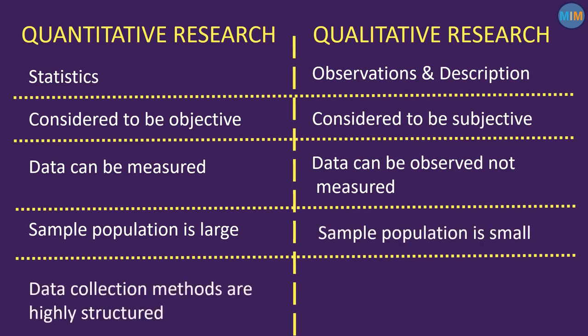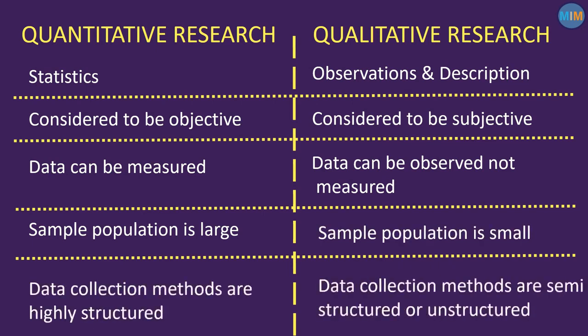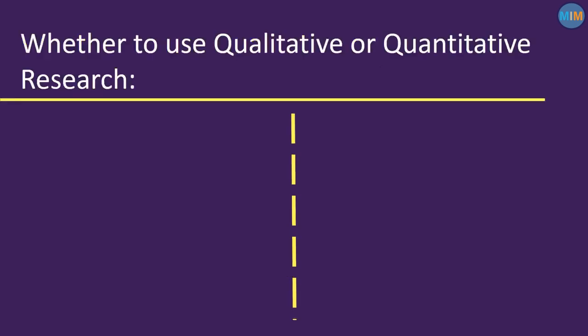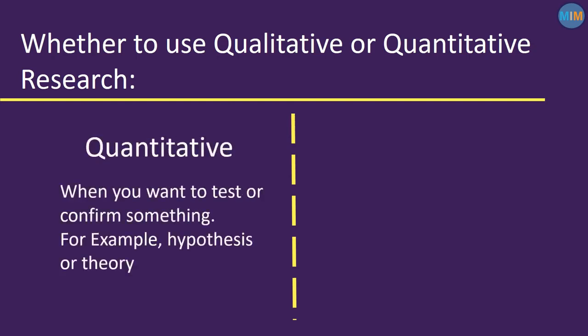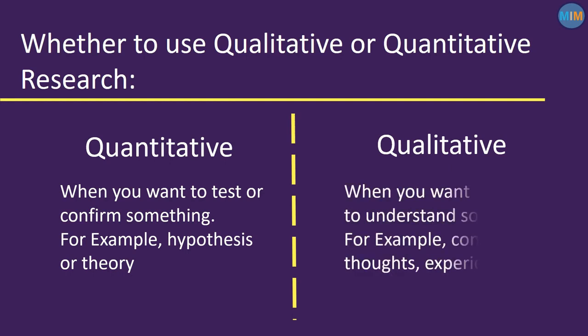In quantitative research, data collection methods are highly structured. On the other hand, in qualitative research, data collection methods are semi-structured or unstructured. Most importantly, you must use quantitative research when you want to test or confirm something. You must use qualitative research when you want to understand something.